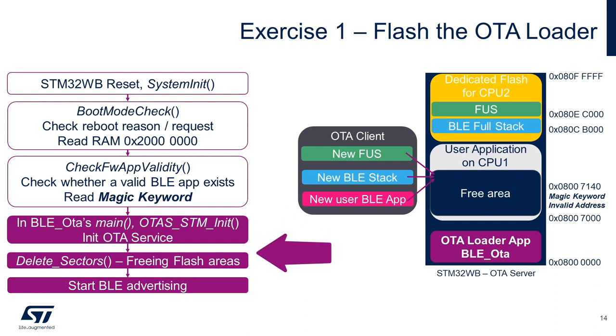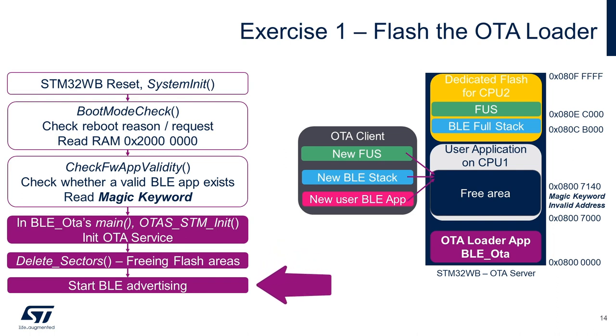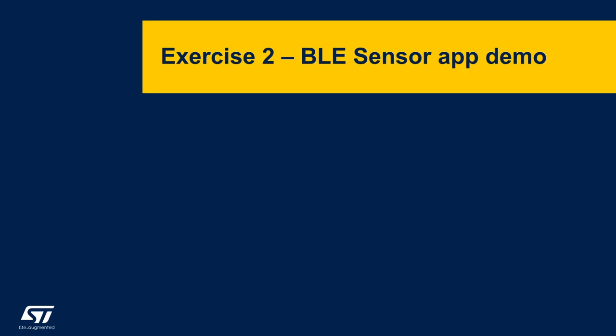Next, the delete sectors function is called for freeing the flash memory. After this, the STM32WB starts advertising, waiting for an OTA client to connect. We have now made the STM32WB advertise. Let's use the mobile app to transfer a firmware image.